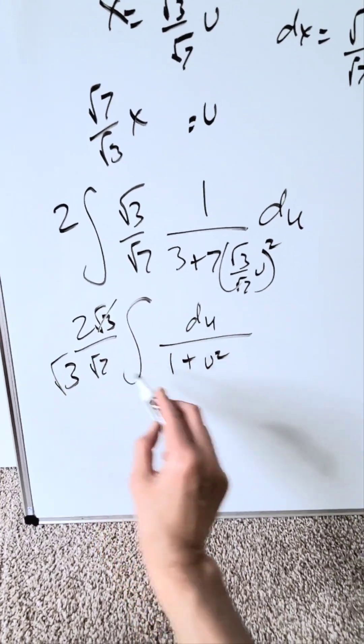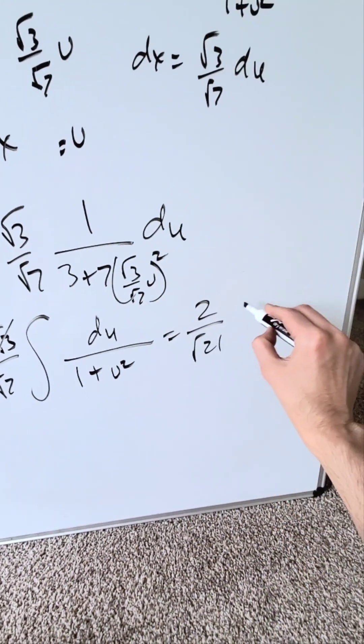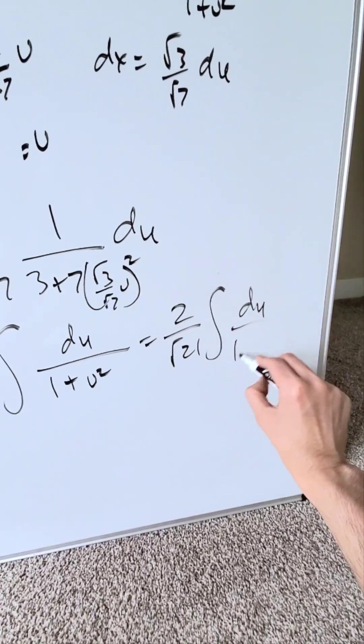This comes in here root 3 times. I'm looking at a 2 over root 21. Then I have here a du over 1 plus u squared.